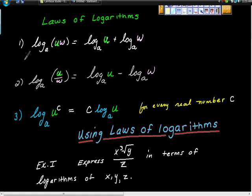It suggests that if we have log base a of u times w, it can be rewritten as log base a of u, this u is this one, plus log base a of w.